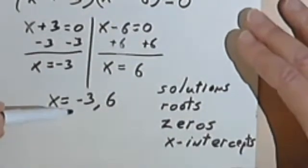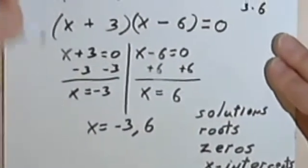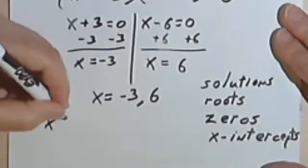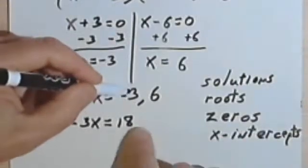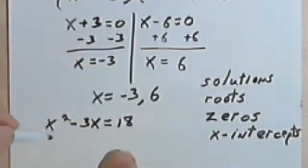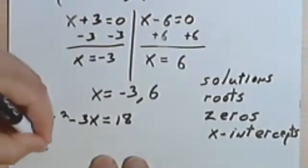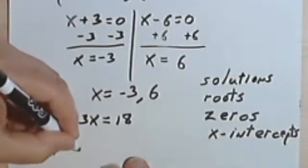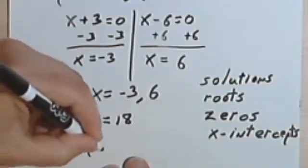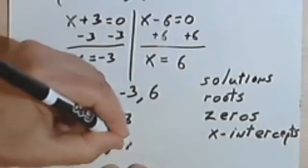So any of those terms could be applied to these two numbers. Now we still have to check and make sure we're right. So let's rewrite the original problem. x squared minus 3x equals 18. And let's plug in negative 3 to see if this will work.